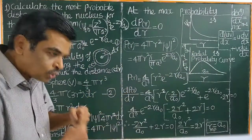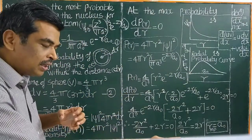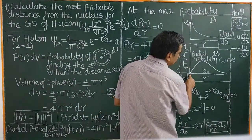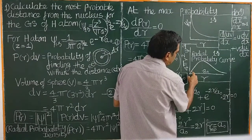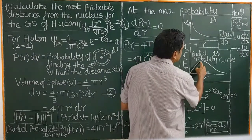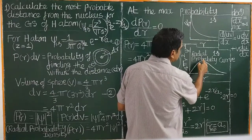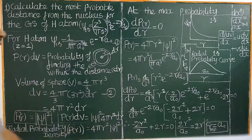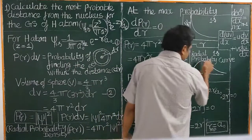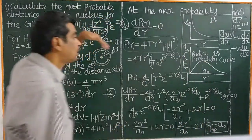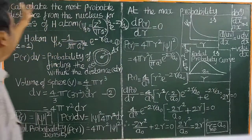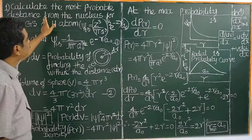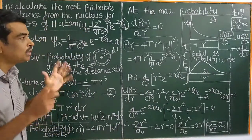The electron is not close to the nucleus — it is at a particular distance. At zero distance, at the nucleus, the electron density is zero. The probability density increases, and at a certain distance the electron is most likely found. That is the most probable distance. Let us now calculate this most probable distance for the ground state of the hydrogen atom.